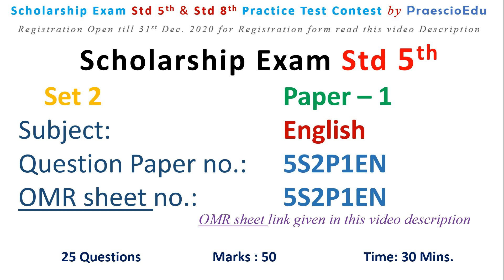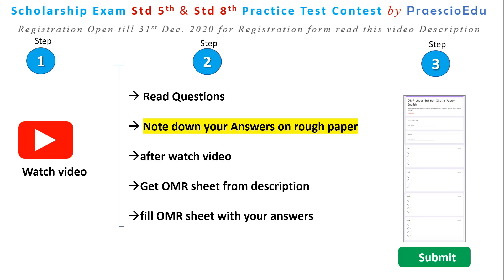What does the student have to do? Here are three steps. Step one: watch this video. Step two: read all the questions. Note down your answers on rough paper. After watching this video, get the OMR sheet from this video's description box. Fill the OMR sheet with your answers. In the OMR sheet, your registered email ID and role ID need to be filled, then fill your correct answers and submit it.